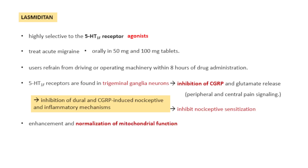In addition, lasmiditan also enhances and normalizes mitochondrial function, which may be defective in the case of migraine. Importantly, it has got no action on the 5HT1B/1D receptors, which are located on the cerebral blood vessels. Because of this, lasmiditan does not cause vasoconstriction, and that is the reason why it can be used very safely in cardiovascular patients. It has high affinity towards the 5HT1F receptor compared to the 5HT1B/1D receptor, which are not activated.